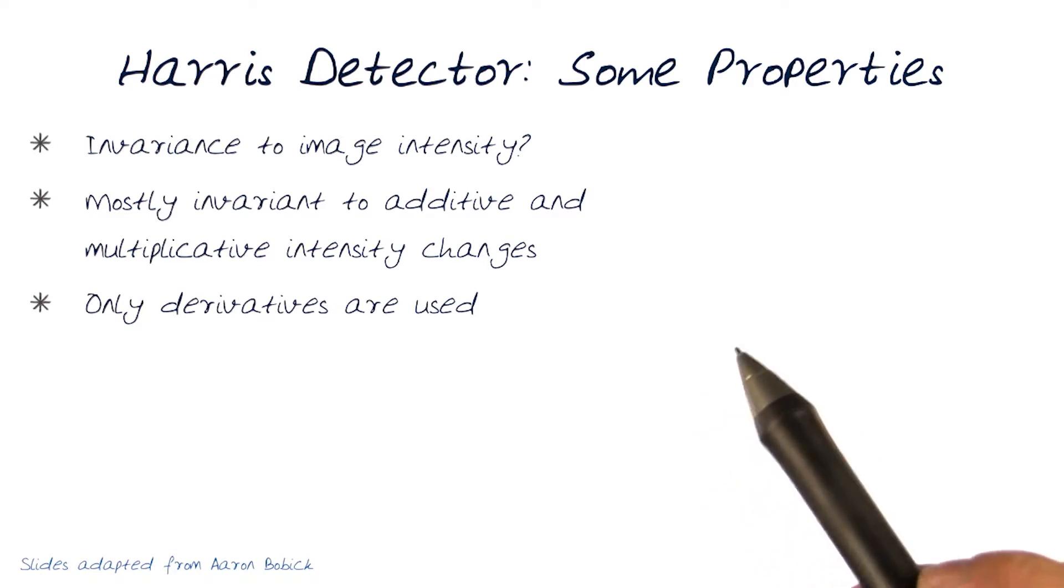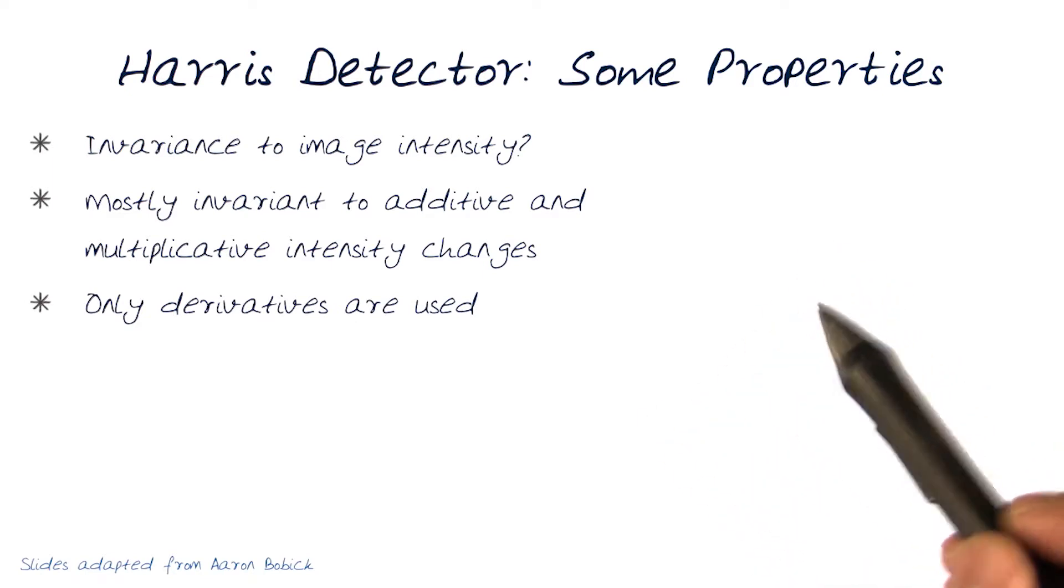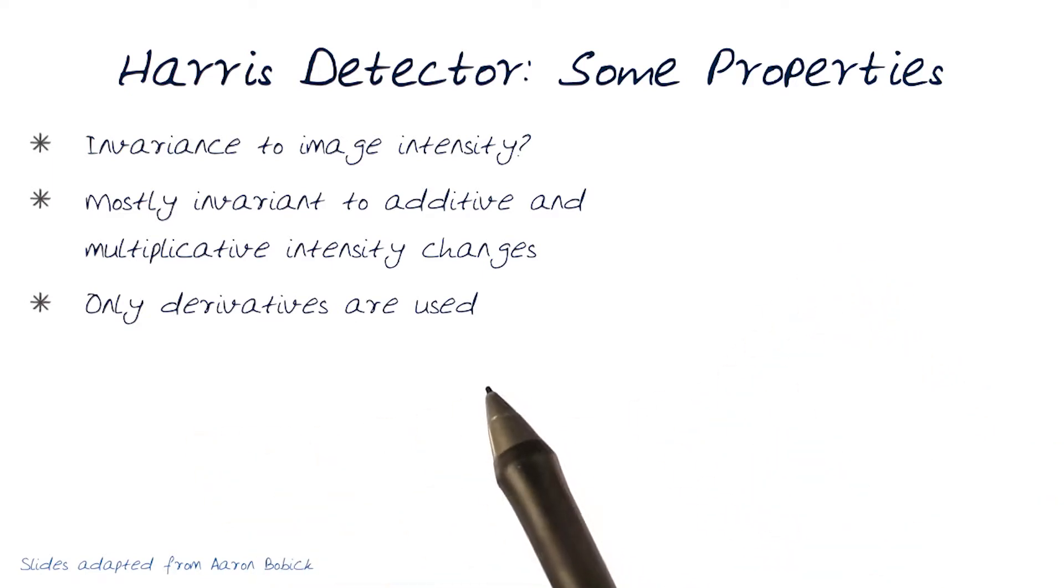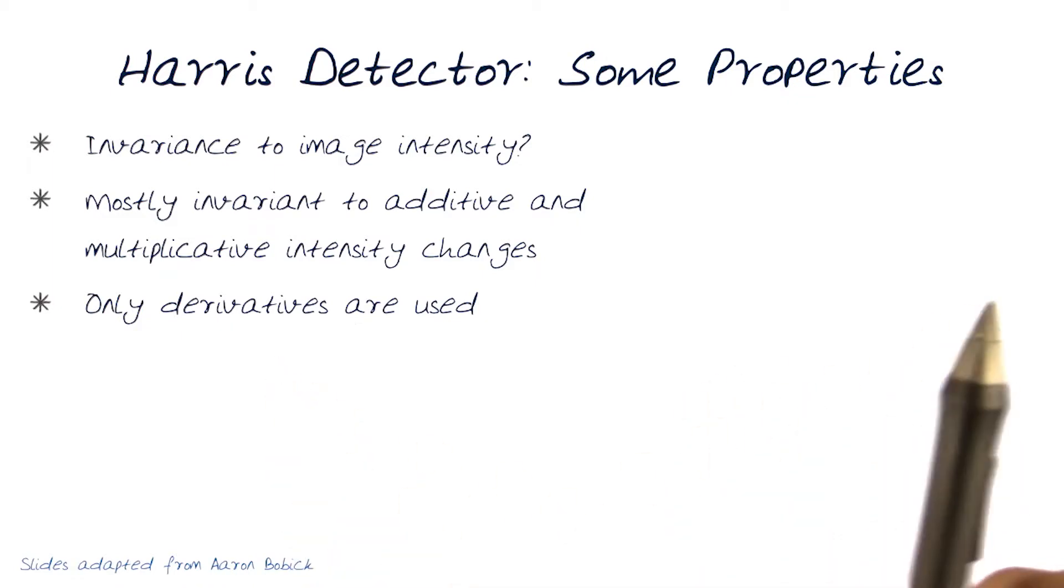Essentially what happens at any point in an image, as long as we are working with derivatives, we should be able to compute the information, the response function. Response functions purely being dependent on the derivatives would not care if the image intensity in the region that we're looking at is much larger from one to the other.